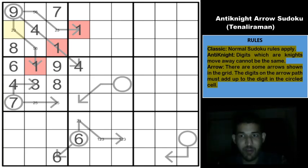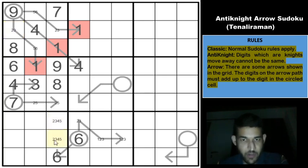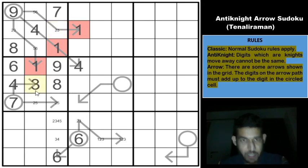Along column 3, digits 1, 6, 7, 8, 9 are placed. Remaining are 2, 3, 4, and 5. A specific cell cannot be 2 or 5 because using the knight's move, both would be eliminated. So that cell can only be 3 or 4. Also, 3 is a knight's move from another cell, eliminating 3 there, leaving that cell as 2, 4, or 5.